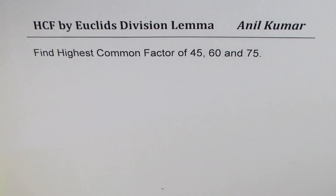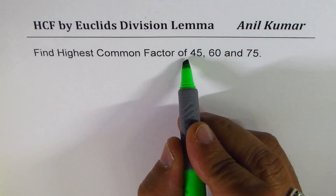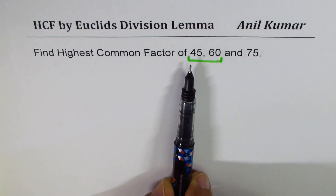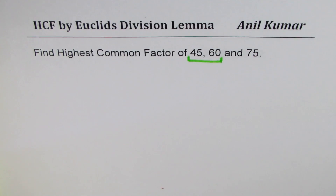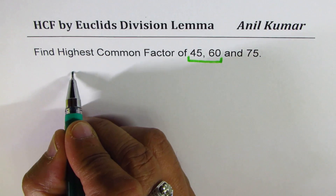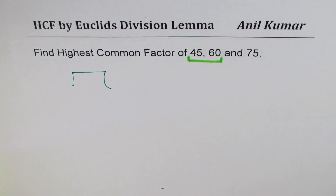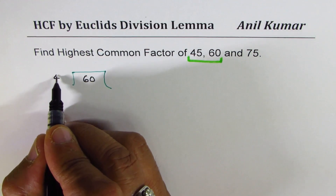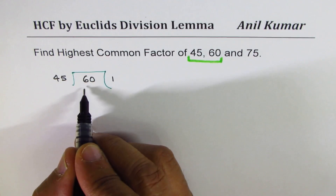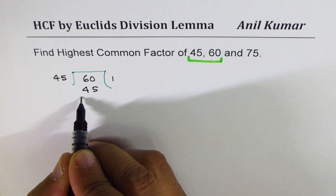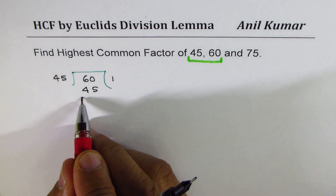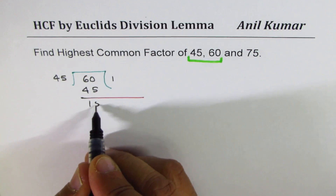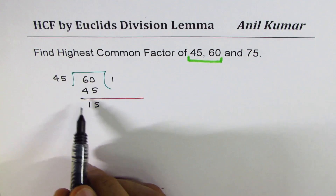The idea is to begin with the smaller numbers first. So 45 and 60 are the smaller numbers. We'll perform the division method using 60 and 45 — 60 becomes the dividend and 45 is the divisor. 45 can go one time in 60, giving us a remainder of 15.